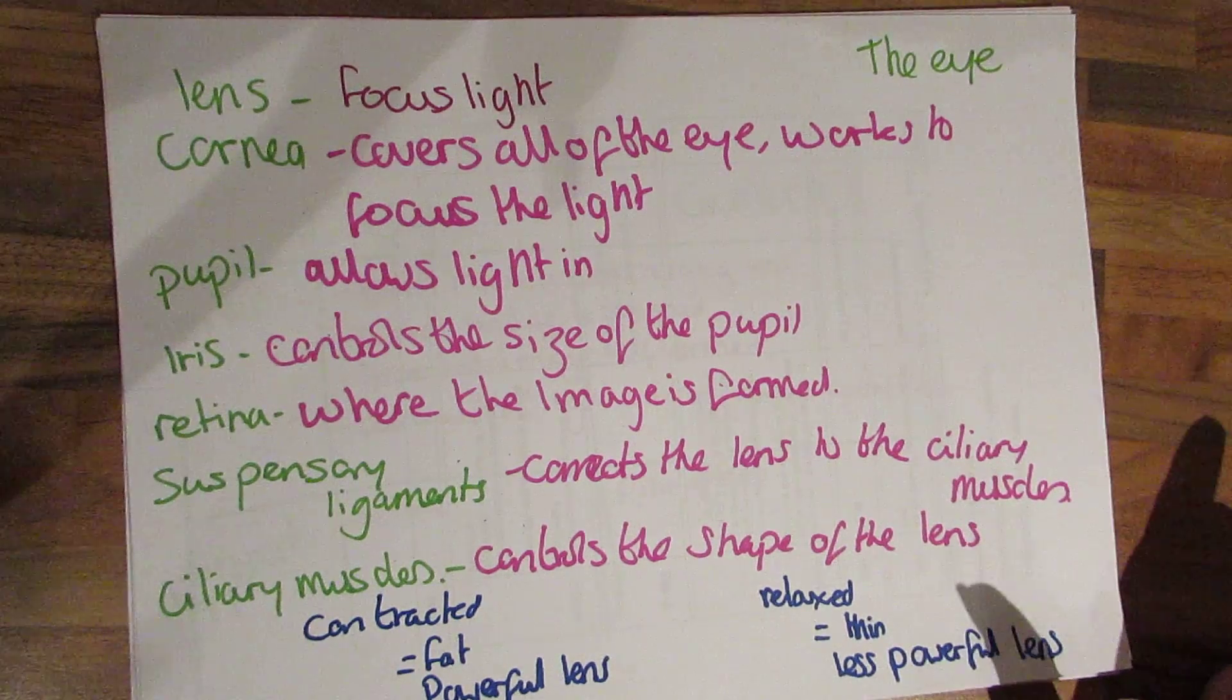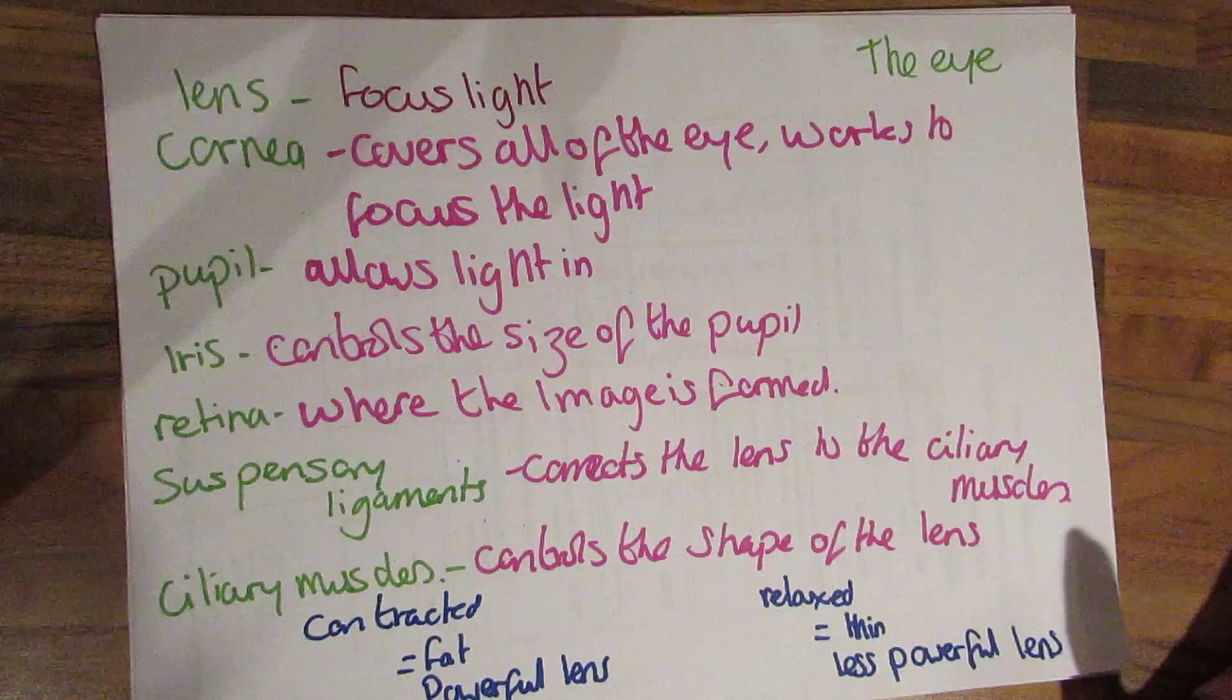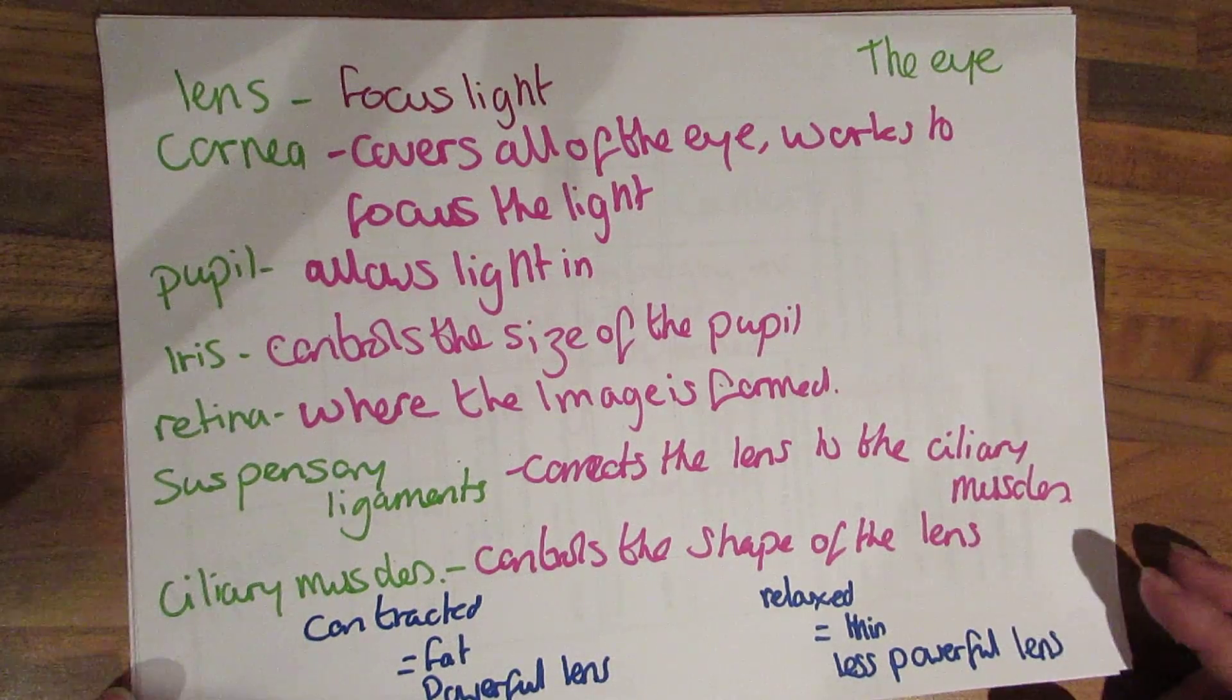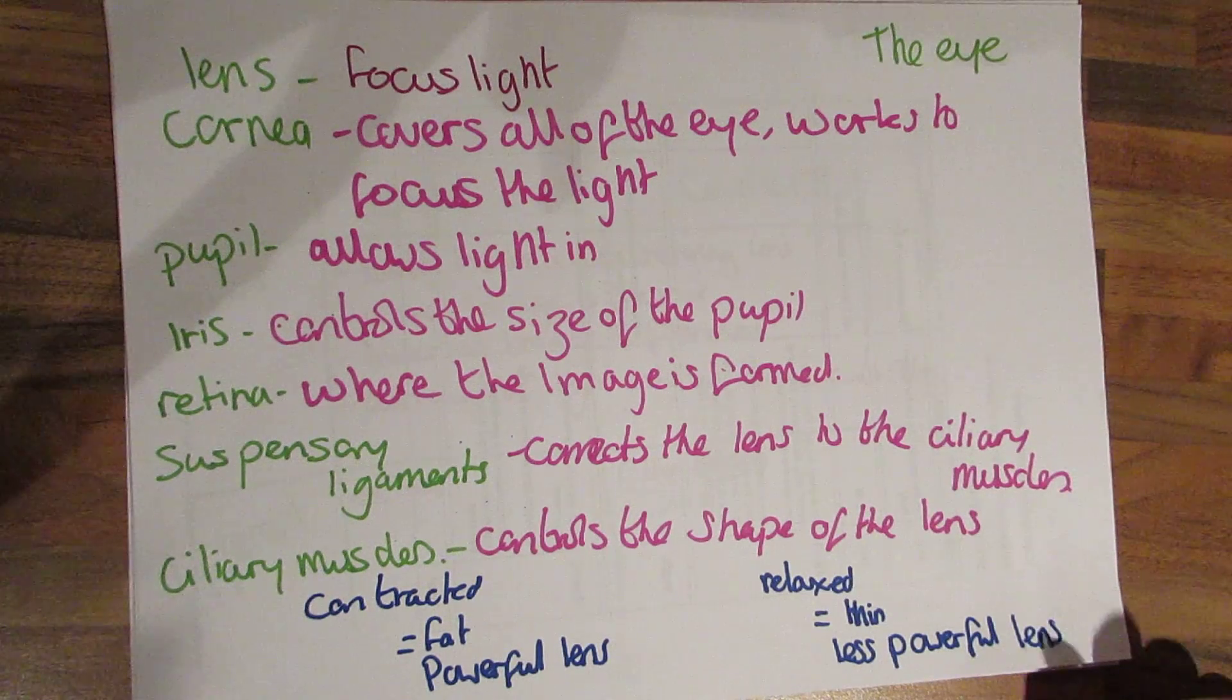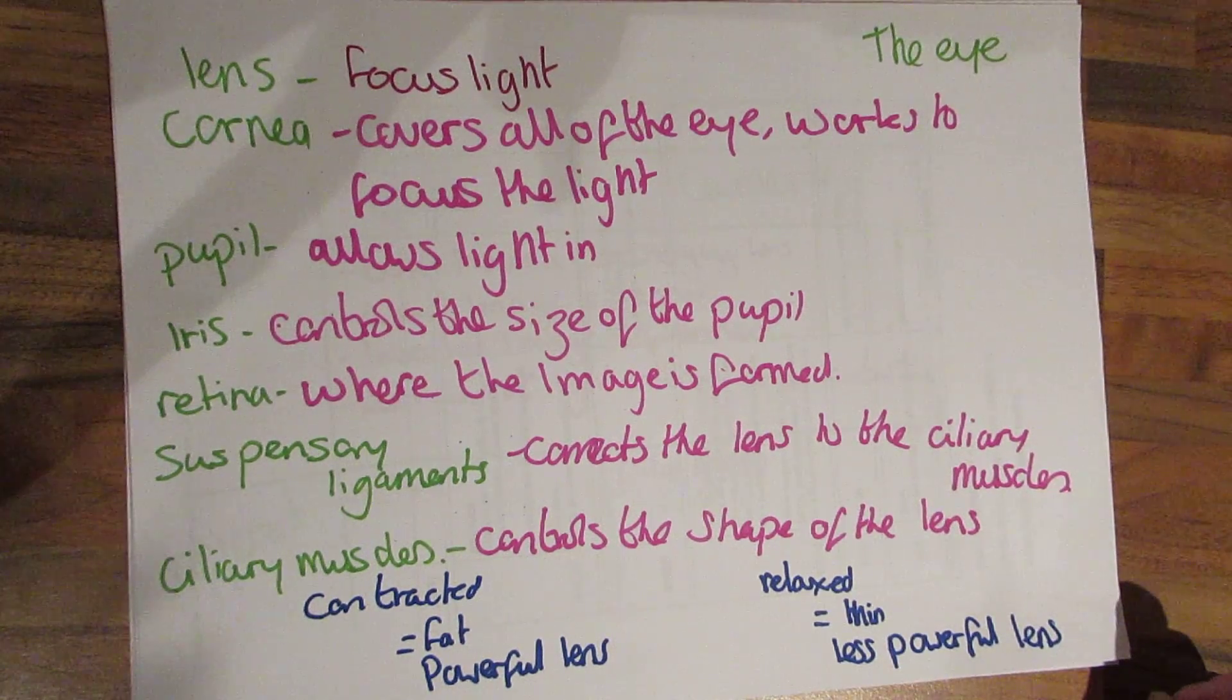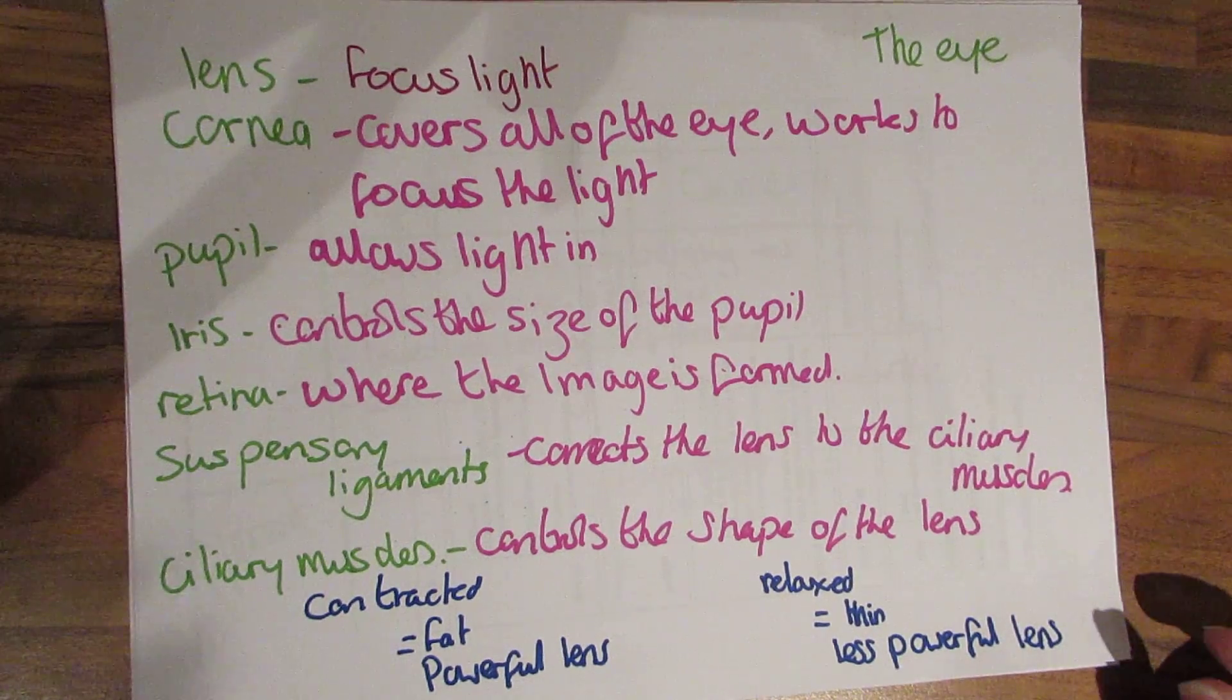The retina, this is where the image is formed. Now you probably should know that the image actually formed in the retina is an inverted image and our brain is really clever and turns this the correct way up for us. The suspensory ligaments connect the eye to the ciliary muscles and the ciliary muscles are what control the shape of the lens.